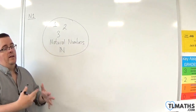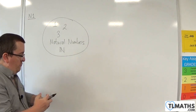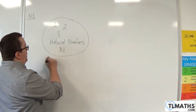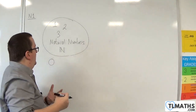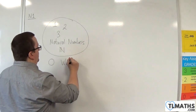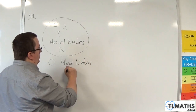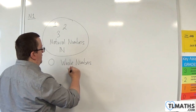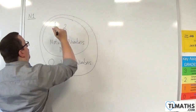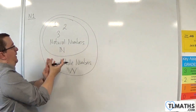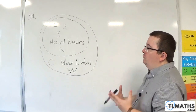So, if you don't include 0 in the natural numbers, then we refer to 0, 1, 2, 3, 4, 5, 6, 7, 8, 9, etc. as the whole numbers, and we use a double W. The whole numbers include all of the natural numbers, and 0.